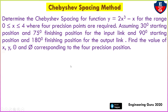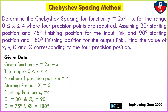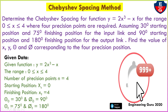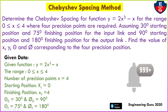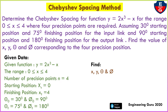In this problem the function is given y equal to 2x³ minus x, and range 0 ≤ x ≤ 4. Number of precision points n equal to 4. From this range we can find xs and xf: xs (starting position) equal to 0, and xf (finishing position) equal to 4. The starting angle theta₀ equal to 30°, finishing angle 75°; output link phi₀ equal to 90° and phi_f equal to 180°. We have to find x, y, theta, and phi.